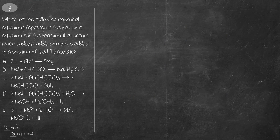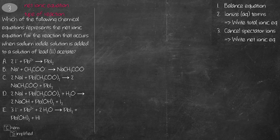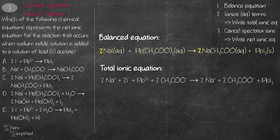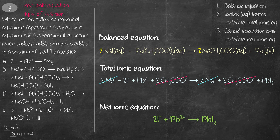We need to recognize this as a net ionic equation. Since we're not given the entire equation, we also need to recognize it as a double replacement reaction. The steps are: write out a balanced equation, then ionize only the aqueous terms to get the total ionic equation. Cancel out spectator ions Na+ and acetate CH3COO-, and what remains is the net ionic equation: 2I- plus Pb2+ giving PbI2, which is answer A.